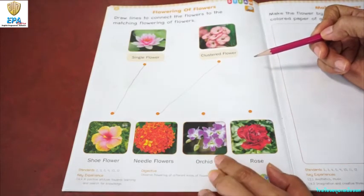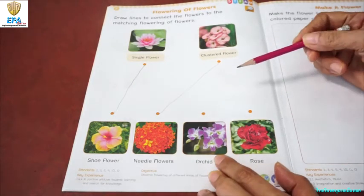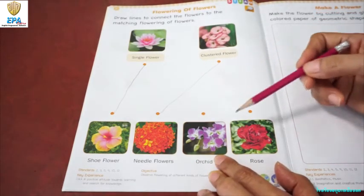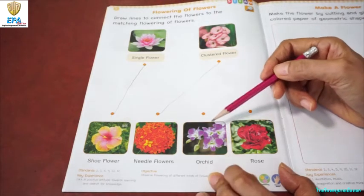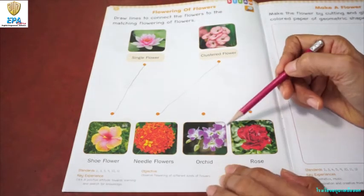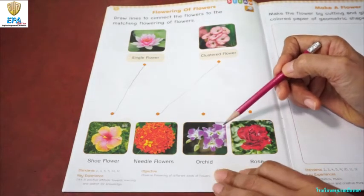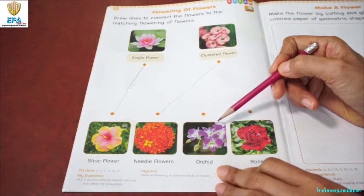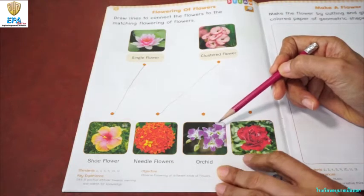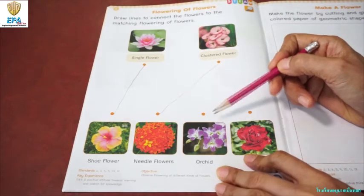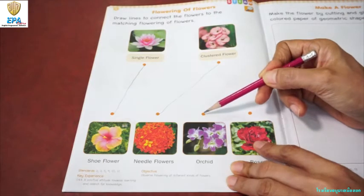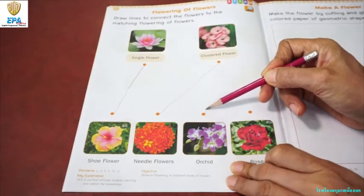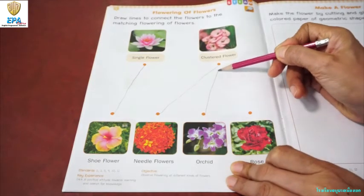Next is the orchid. I am sure that most of you are familiar with this kind of flower. The orchid is also a clustered flower, so you have to draw a line from this point to this point.